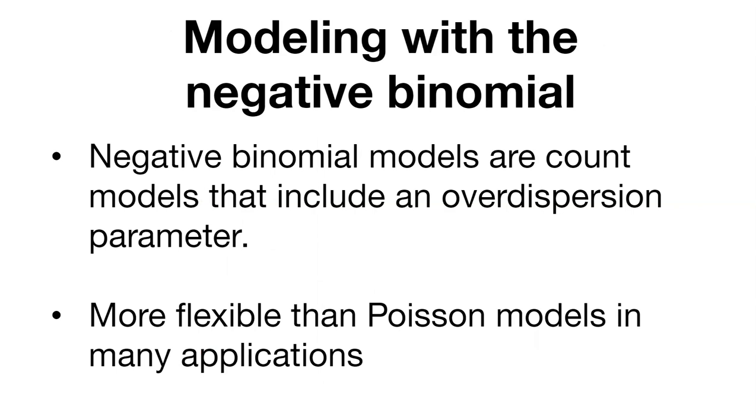Another important distribution when it comes to count data is the negative binomial. The negative binomial is a distribution and an example of a count model that includes an over-dispersion parameter. The negative binomial has one additional parameter that takes into account some of the variance you're seeing in your data by using the over-dispersion parameter. A lot of people like the negative binomial because it's more flexible than Poisson models in many applications.